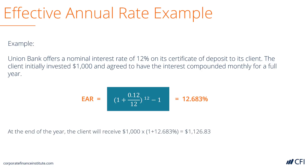So at the end of the year, the client would receive $1,000 times 1 plus 12.683%, which equals $1,126.83, not $1,120. Hopefully this has been a helpful guide to understanding what the effective annual rate is and how to calculate it.